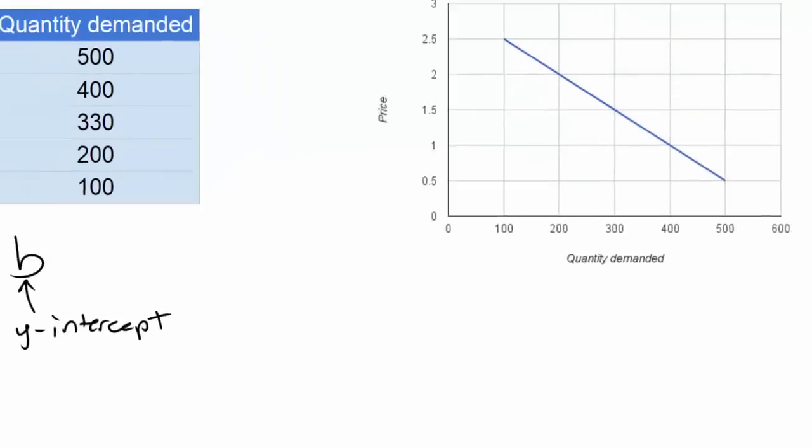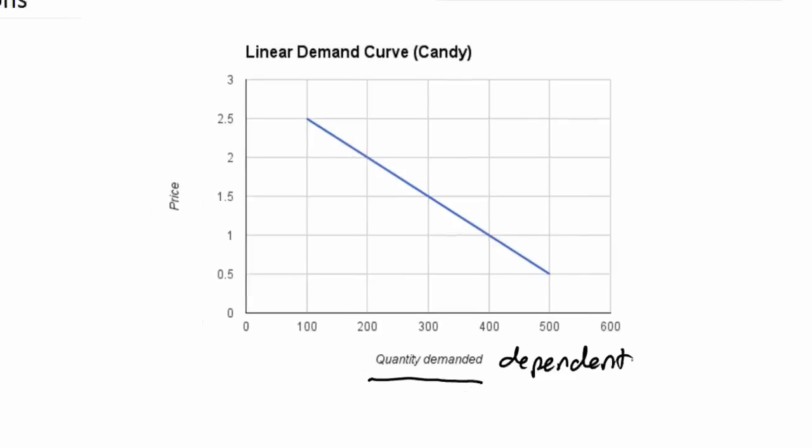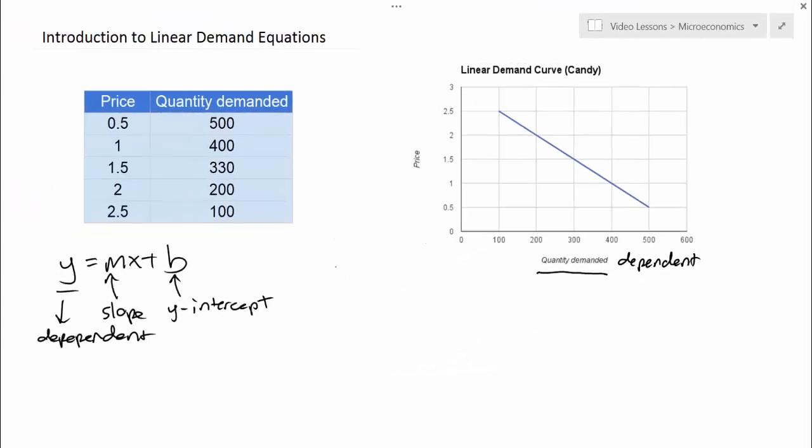But recall from our definition of demand that in fact quantity demanded is the dependent variable when it comes to demand. The quantity demanded of a good depends on the price. The price does not depend on the quantity demanded. So what we're going to be doing is kind of flipping the script here, and instead of y being the dependent variable, we will be talking about the quantity as the dependent variable.